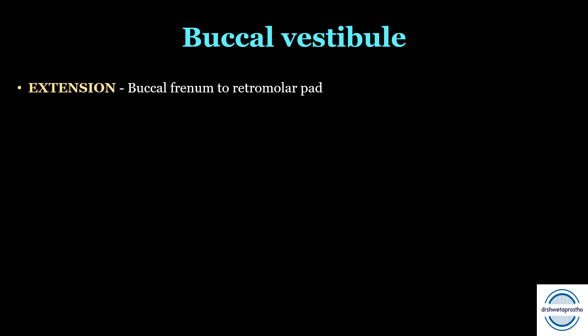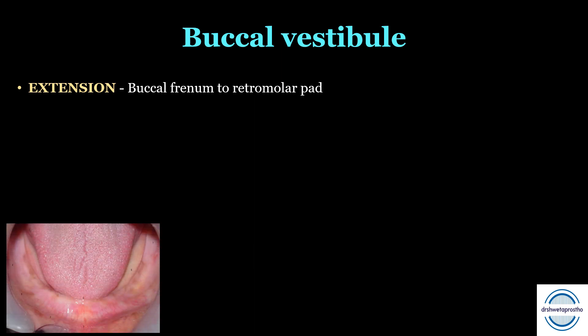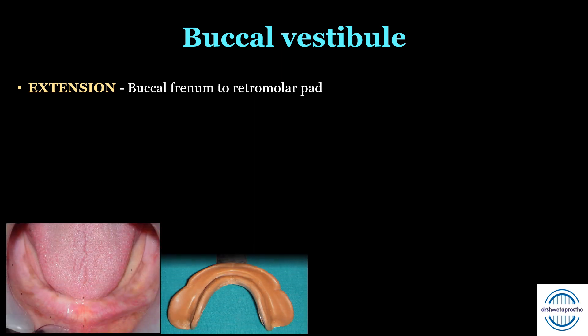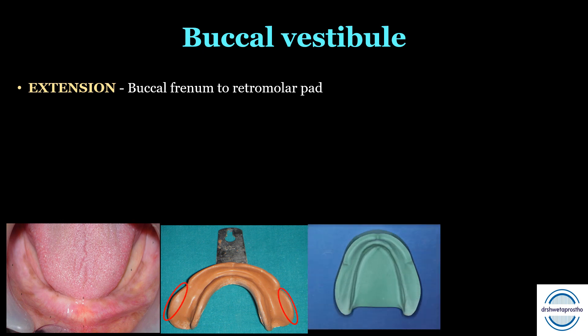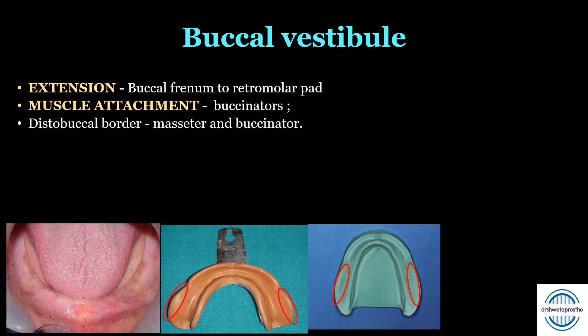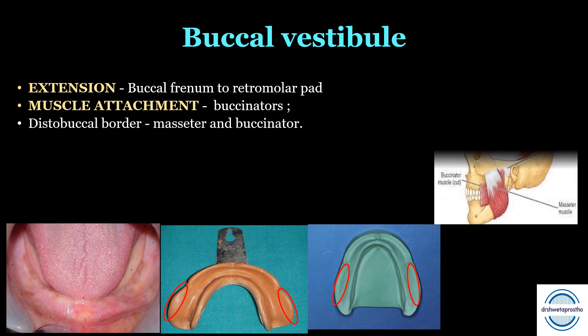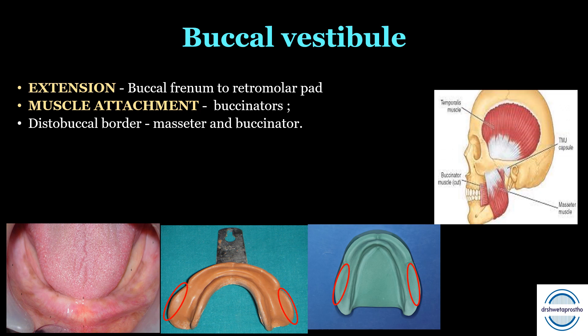Next is the buccal vestibule. It mainly extends from the buccal frenum to the retromolar pad, and is recorded as buccal flange in the impression. The muscle attachment is mainly the buccinator. The distobuccal border is mainly influenced by the masseter and buccinator — two muscles. The fibers of the masseter run outside and behind the buccinator.